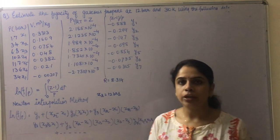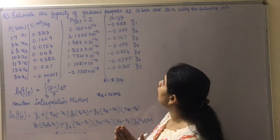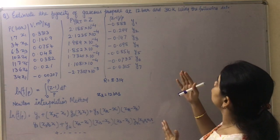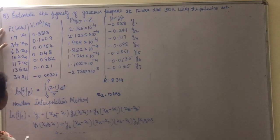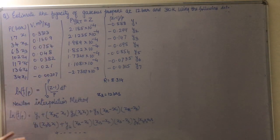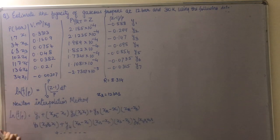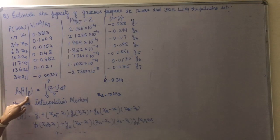Hello students. Here I am going to discuss one more problem related to fugacity. We need to find out the fugacity of gaseous propane at 12 bar and 310 Kelvin using the following data. Pressure is given in bar and volume in meter cube per kilogram. The formula to find fugacity is ln(F/P) = integral from 0 to P of (Z-1)/P dP, where Z is the compressibility factor.